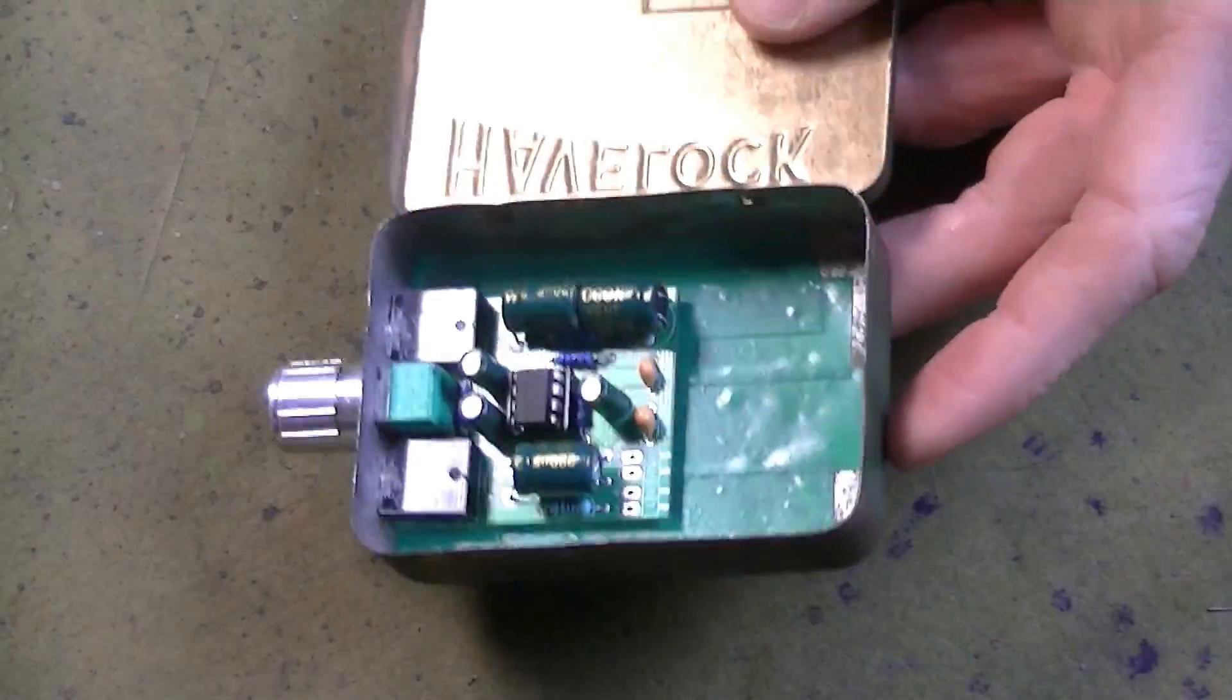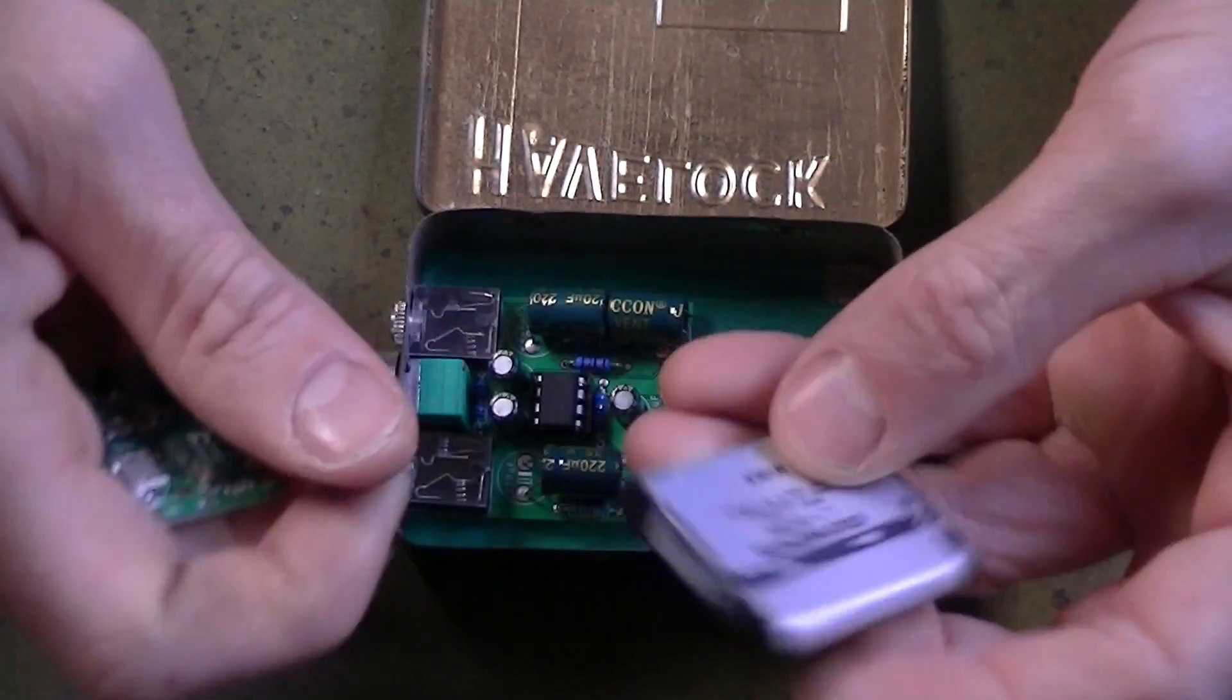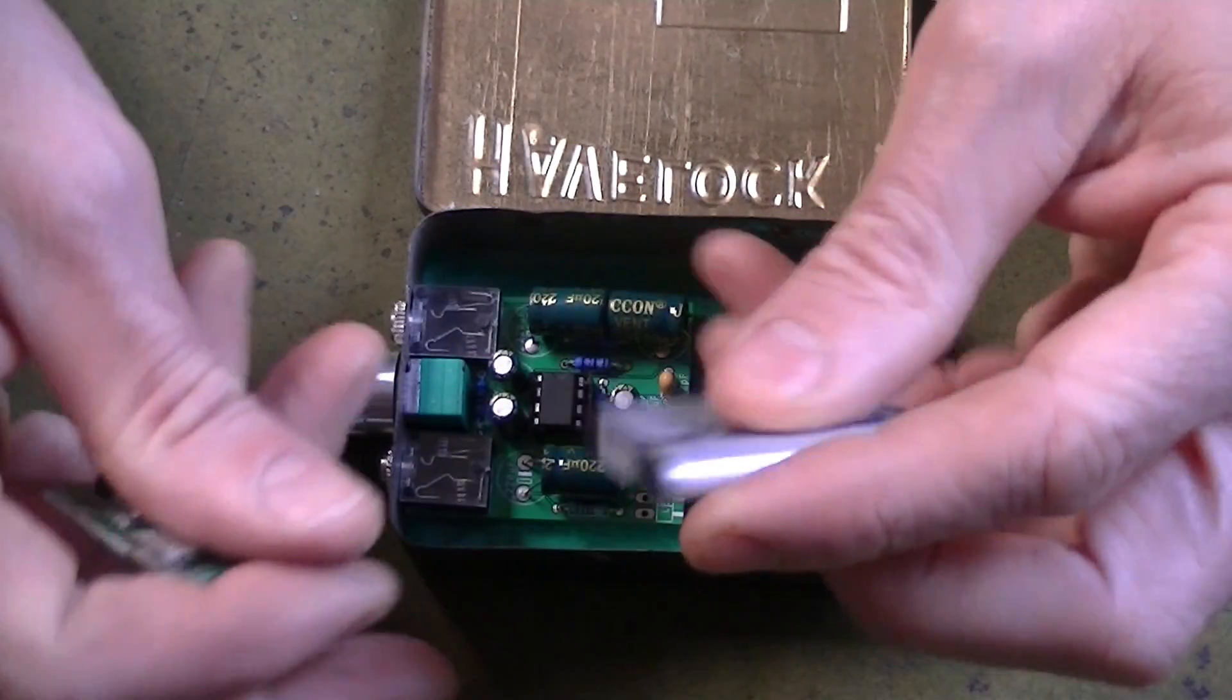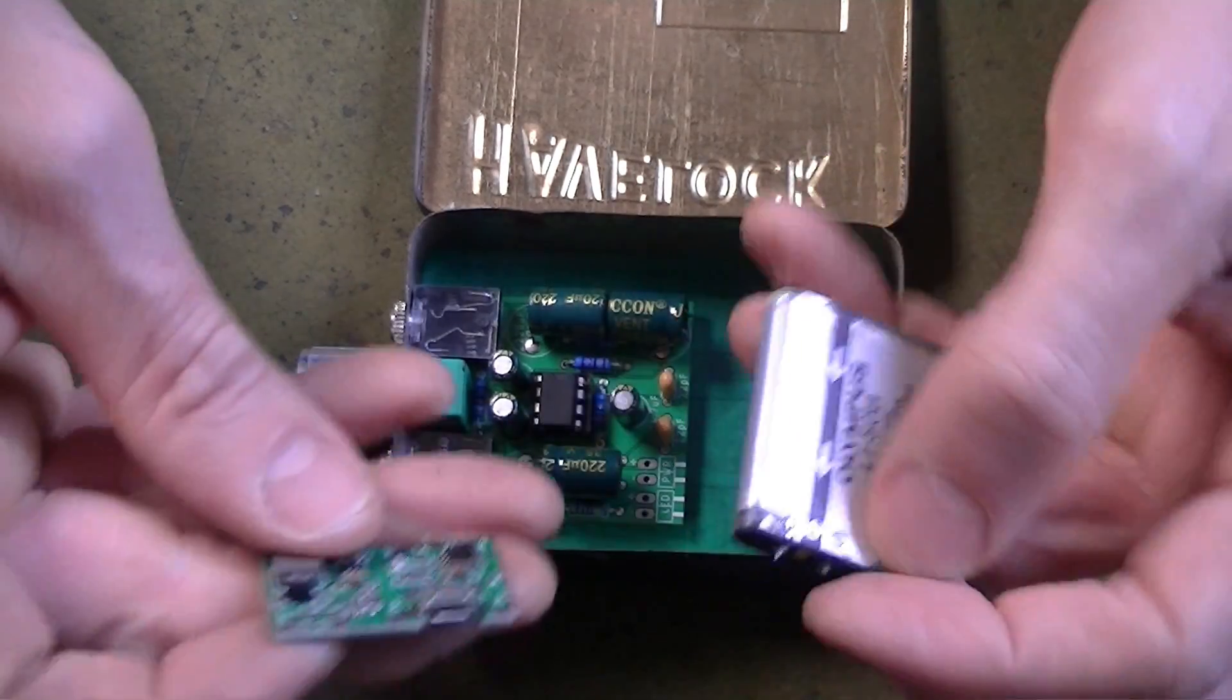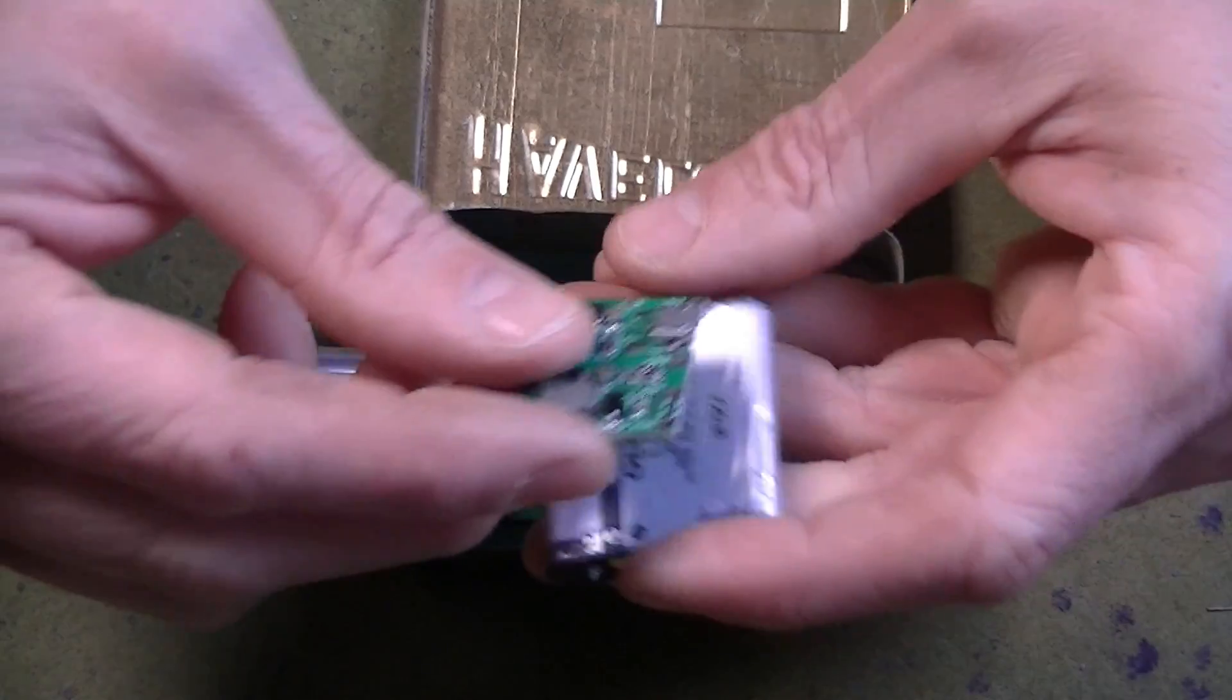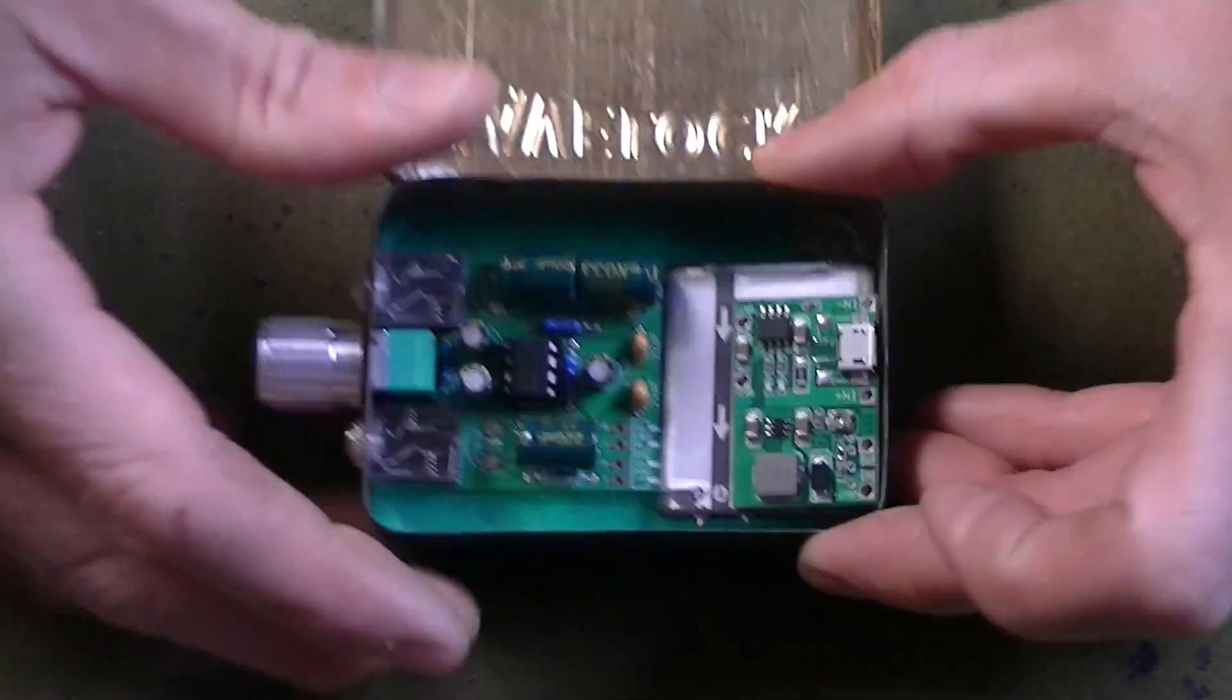So next thing to do is to get this battery. It's just a little, I think it's from a camera, camera battery. And then I'm going to use this little module to charge it up and get the voltage out and I'll put that just there.